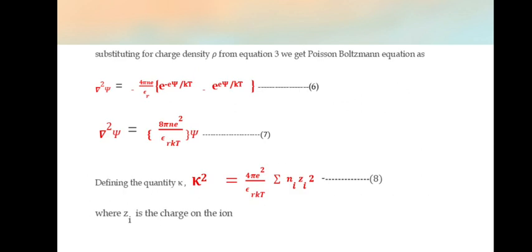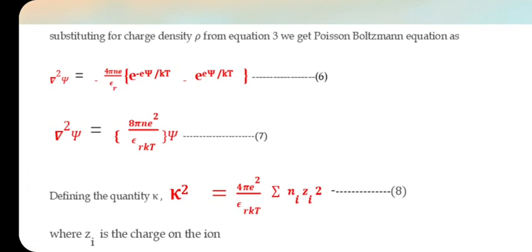Substituting for charge density from equation 3, we get Poisson-Boltzmann equation as ∇²ψ = (4πNe/εR)[e^(-eψ/kT) - e^(eψ/kT)]. So ∇²ψ = (8πNe²/εRkT)·ψ.